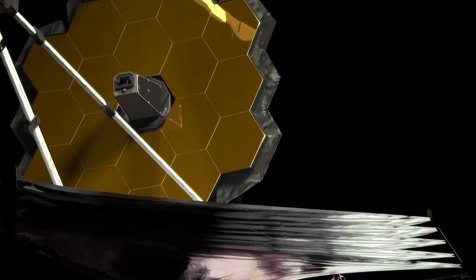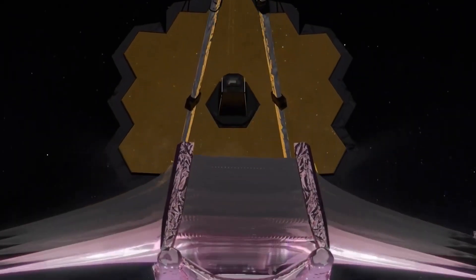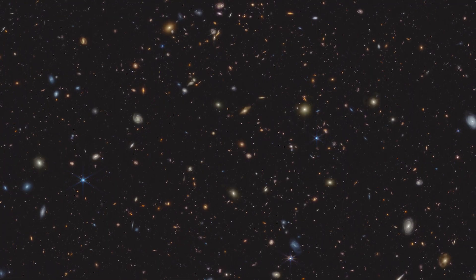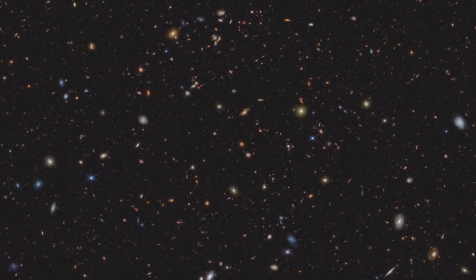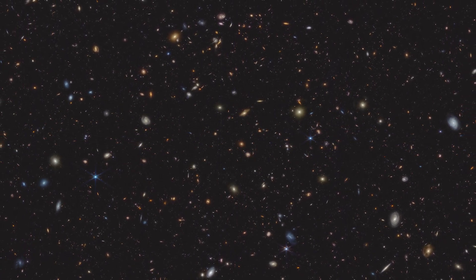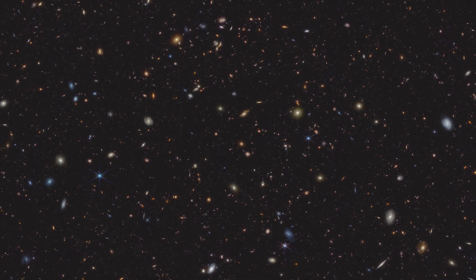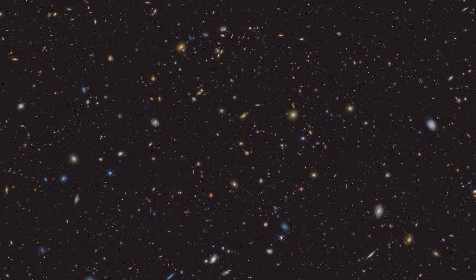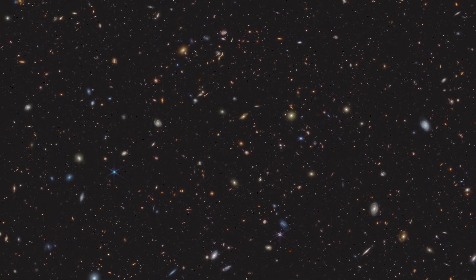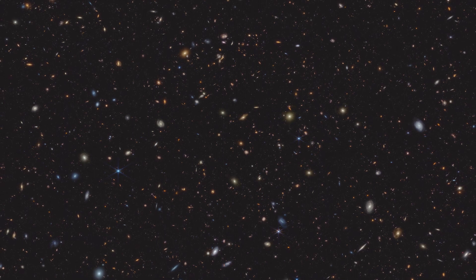Initially, results from the James Webb Space Telescope seem to imply that large, bright galaxies developed before the alleged Big Bang. If proven, this would radically challenge current cosmological beliefs. Many of these galaxies appear to be more massive than the traditional cosmological model, which defies the composition and development of the universe.